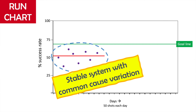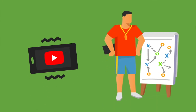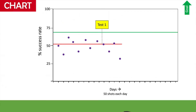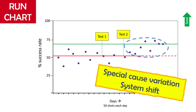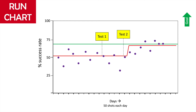He needs to do something different to improve the results. After watching some videos and talking to his coach, AJ starts trying different shooting techniques. Based on the data, he chooses to adopt technique two and works on refining it further. He sees an incremental improvement and eventually has eight data points above the centerline, which tells him he has shifted the system. This is a signal for special cause variation on a run chart. The new median, calculated using the last eight data points, is 68%, getting him close to his goal.